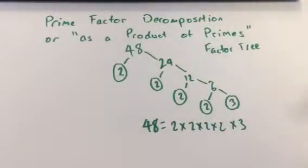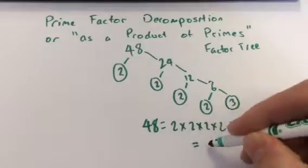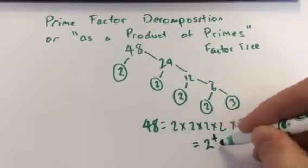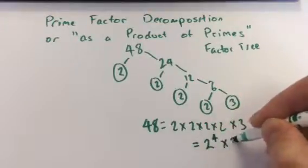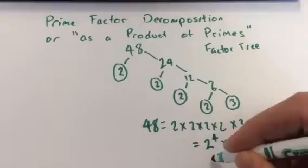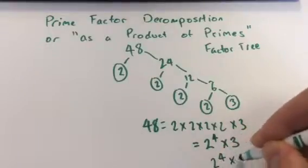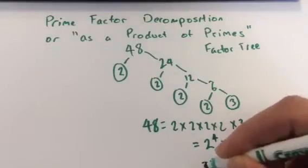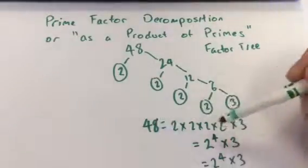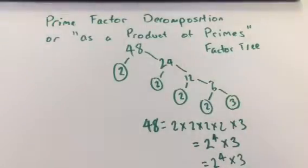16 times 3. And so, in its simplest form, it's 2 to the 4 times 3. Just a bit clearer — 2 to the 4 times 3. And that's 48 written as a product of its prime factors.